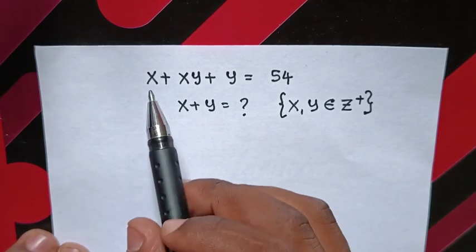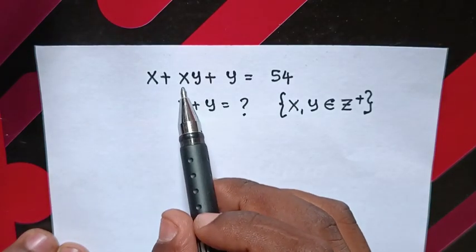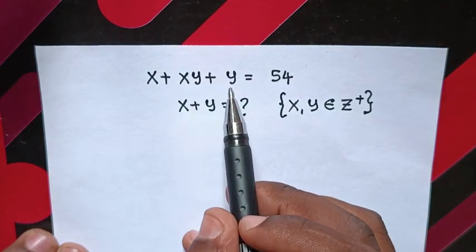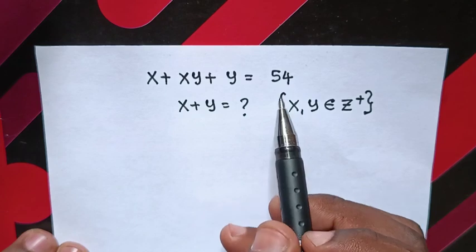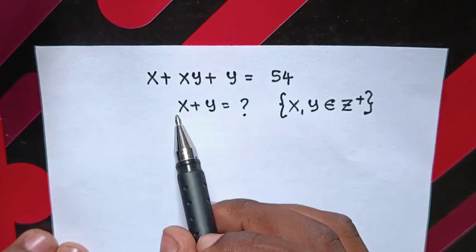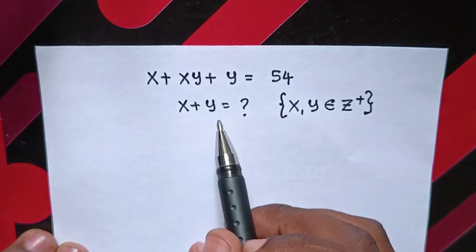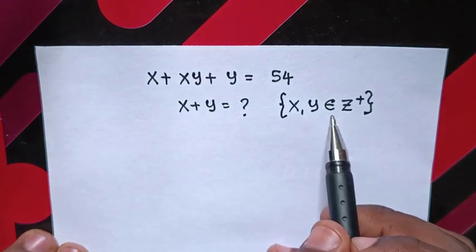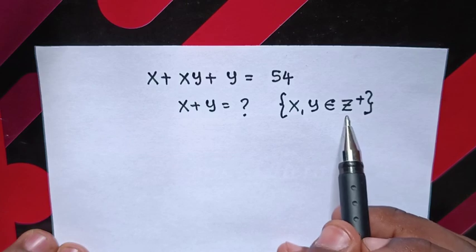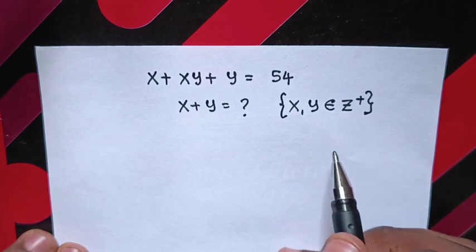Hello. How to solve x plus xy plus y equals 54, to find the value of x plus y, such that x and y are elements of positive integers.